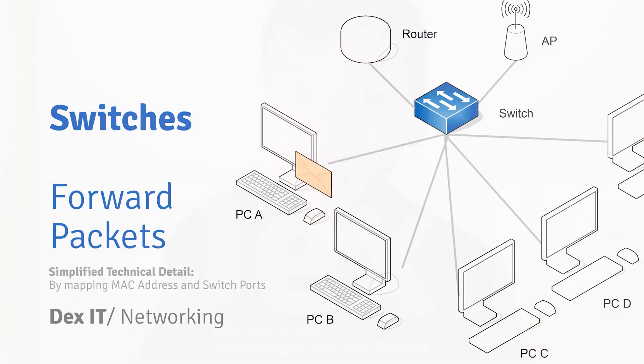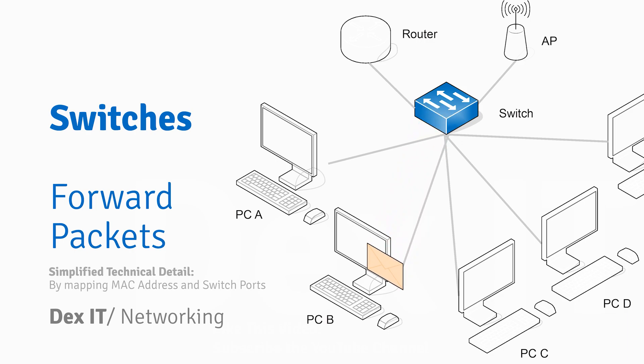Let's look at how switches work. If PC-A wants to send a message to PC-B, it passes through the switch. The switch receives the message from PC-A, knows that PC-B is in a certain direction, and sends the message directly to PC-B. That's what a switch does.